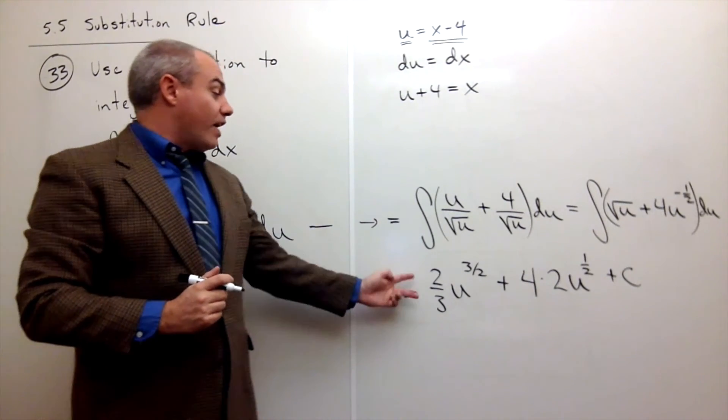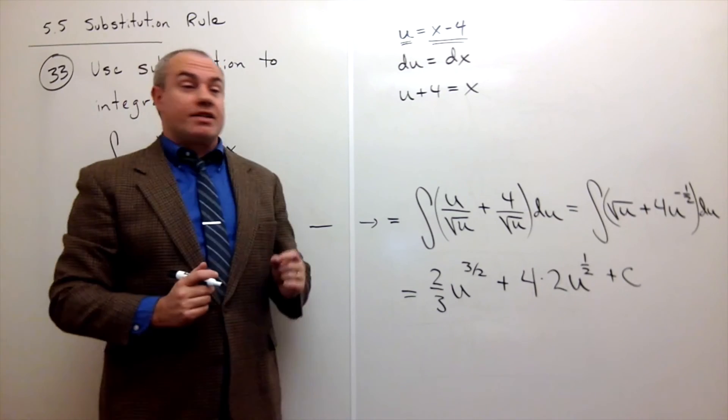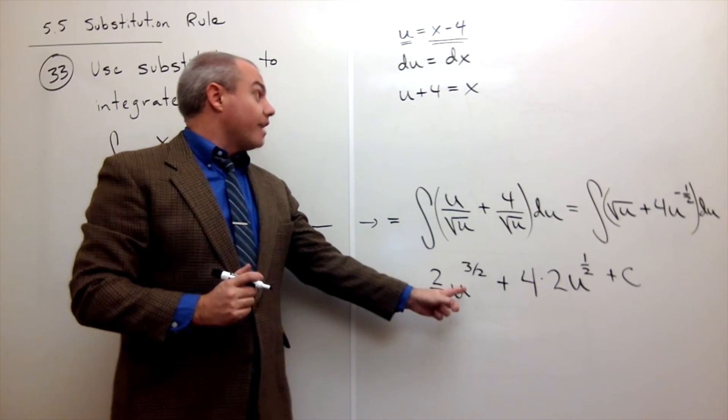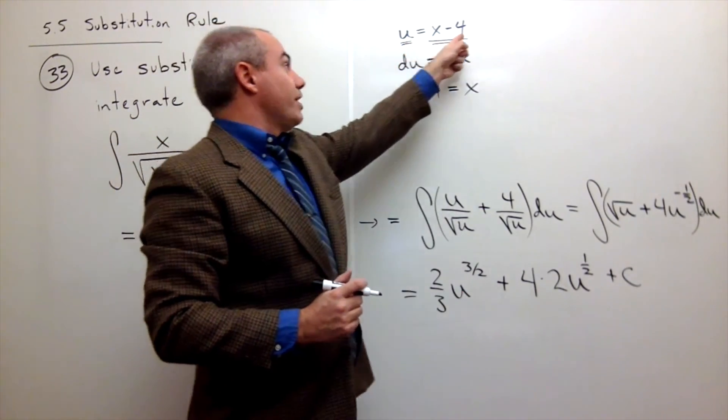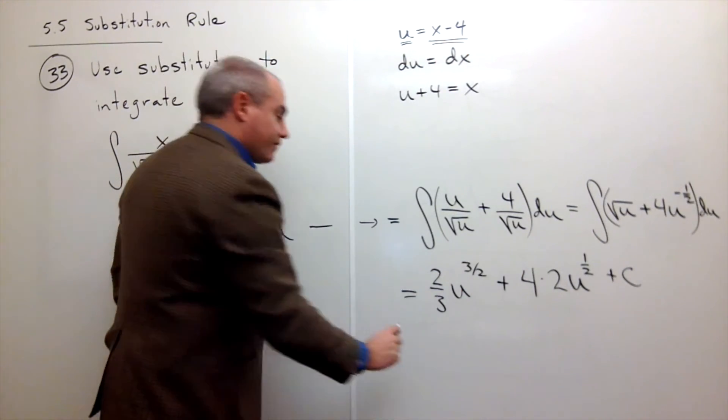So now I've taken my antiderivative. And all that's left to be done is substitute back in for the u's. And I know that u is x minus 4. So I'm just going to replace all u's here by x minus 4.